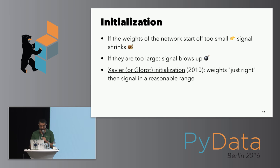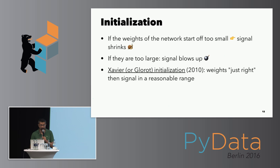One could think you'd be able to make deeper and deeper networks to solve all kinds of problems, but there's a catch. Deeper networks are notoriously hard to train. If we start off with very small weights, the signal might shrink to zero going forward, meaning no gradient changes come back via back propagation — training either slows down or halts. On the other hand, if the weights are too big, they might overflow.